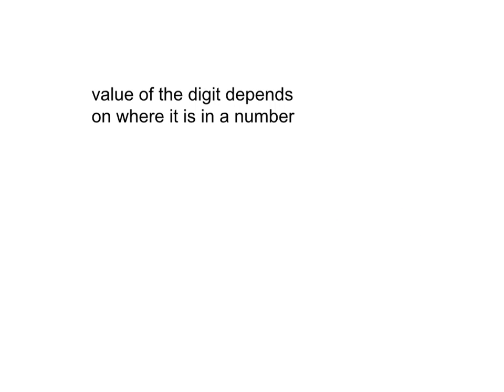The value of the digit depends on where it is in a number. For instance, in the number 732, the value of the 7 is 700 because it is in the hundreds place.